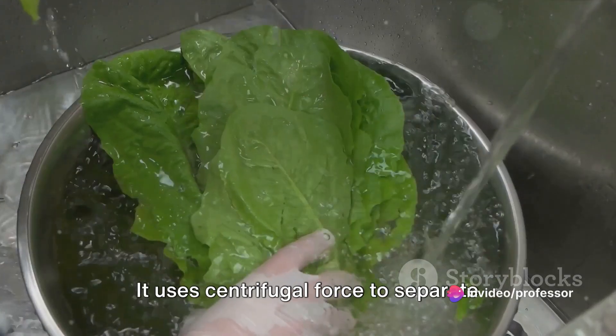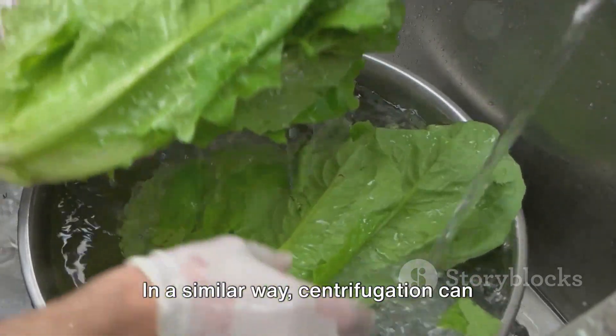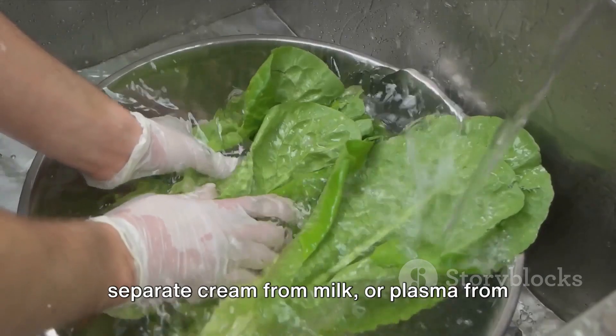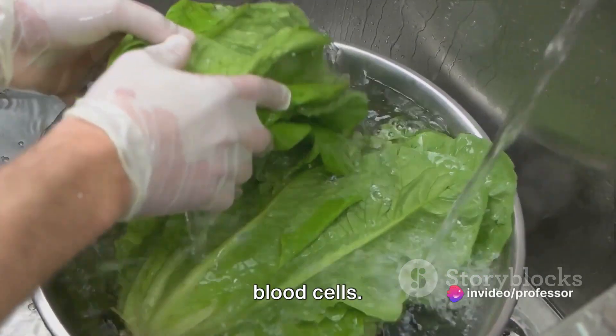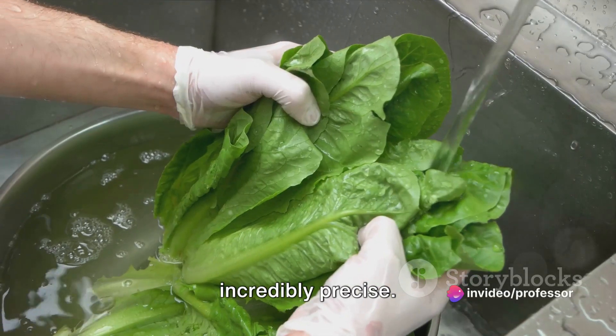Imagine a salad spinner. It uses centrifugal force to separate water from lettuce leaves. In a similar way, centrifugation can separate cream from milk or plasma from blood cells. It's fast, it's furious, and yet incredibly precise.